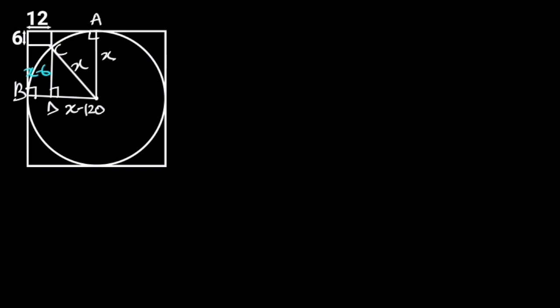Going further, let's focus on triangle CDO. Since triangle CDO is a right triangle, from Pythagoras' theorem: X squared is equal to X minus 6, squared, plus X minus 12, squared.